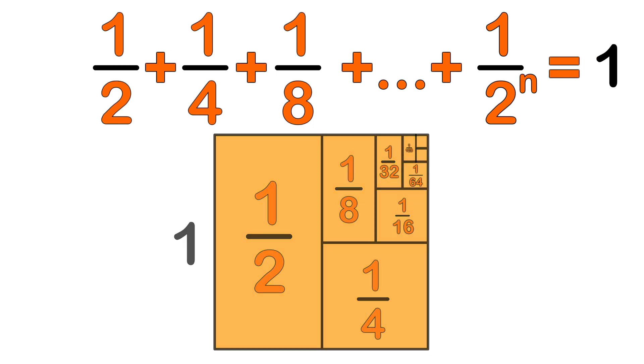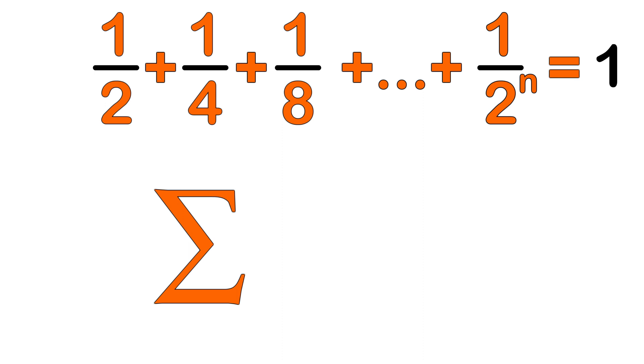We can simplify the notation using the summation symbol. We start with 1 over 2 raised to the power of n. The summation begins with n equals 1 and ends at infinity. This summation represents an infinite series because it keeps on going forever.